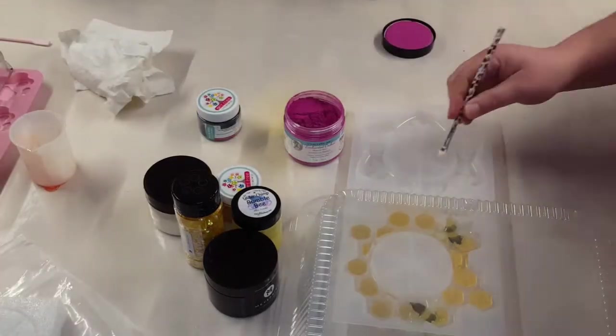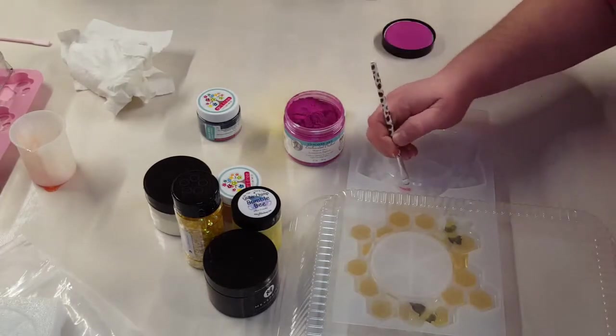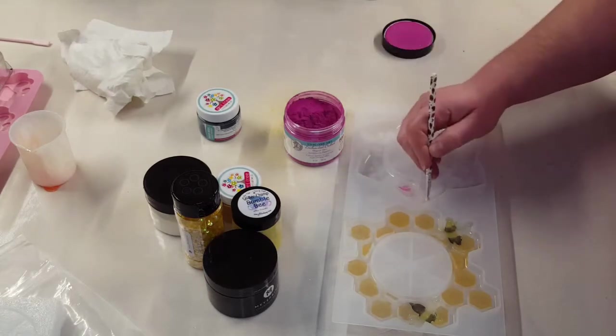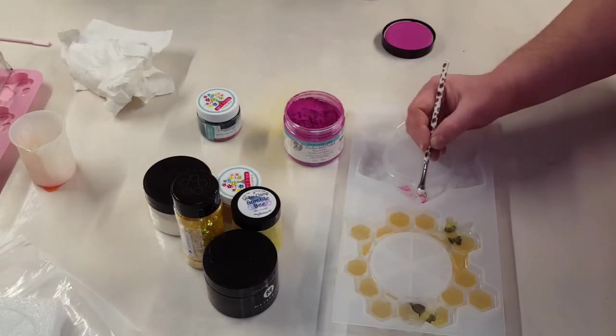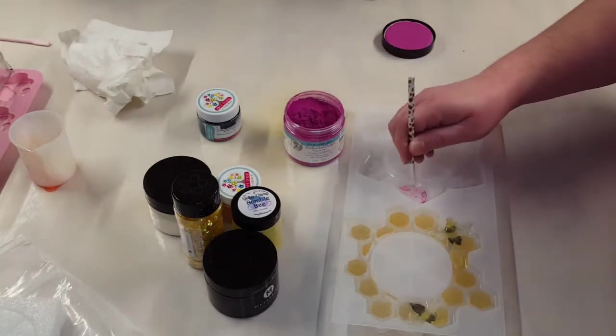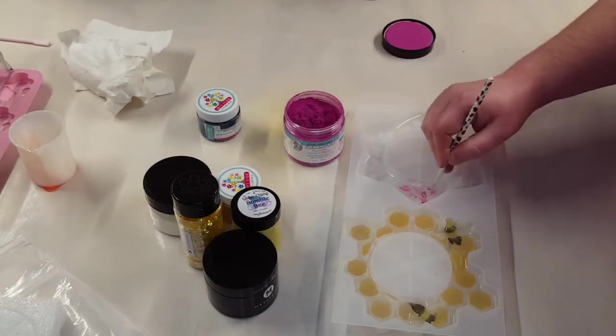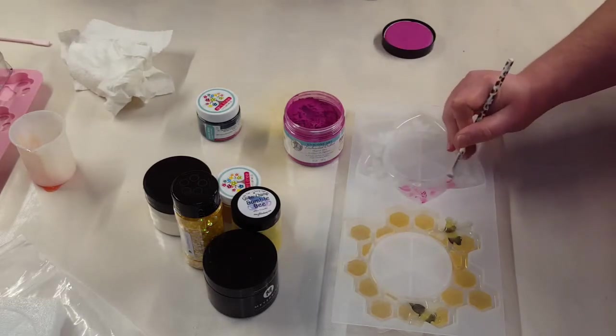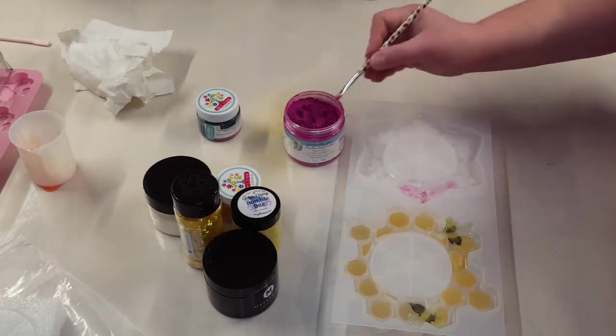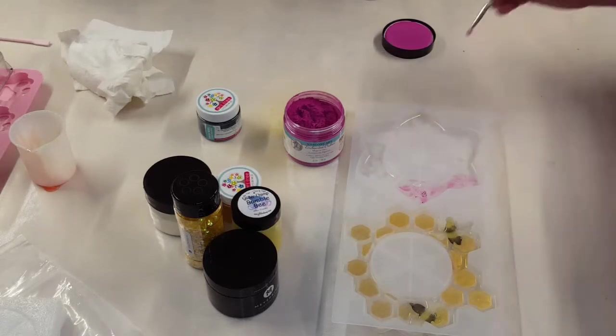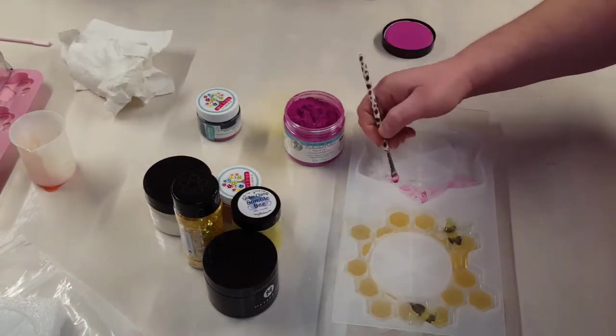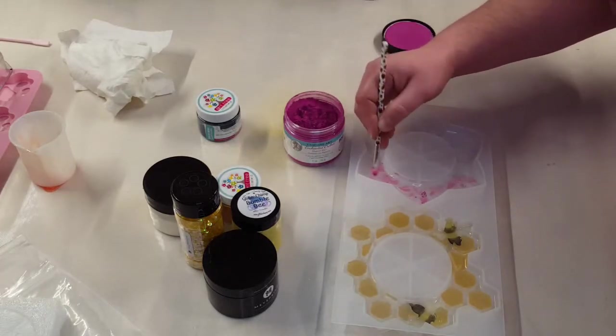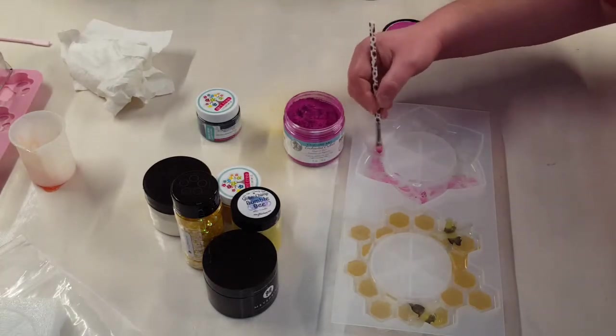So while that's curing I am going to go ahead and start the flower one. I am using this mica from Unicone Art, I got it off of Amazon. It is Enchanted Orchard and it's a really really pretty magenta and it kind of has a blue shift to it.